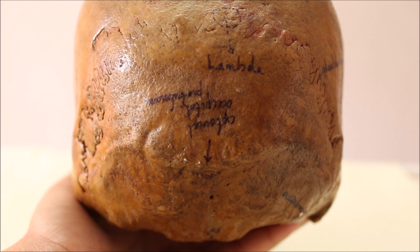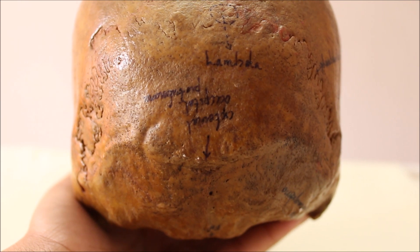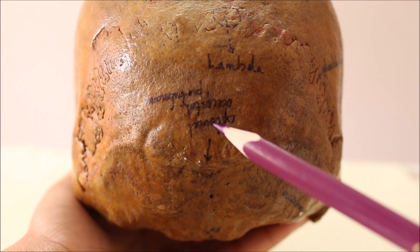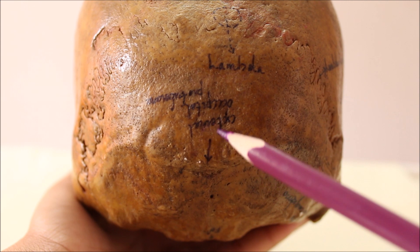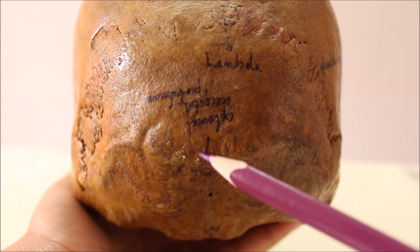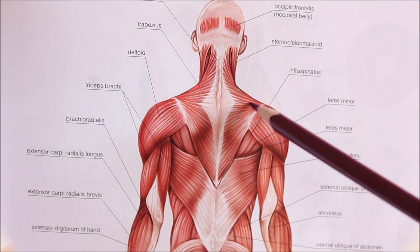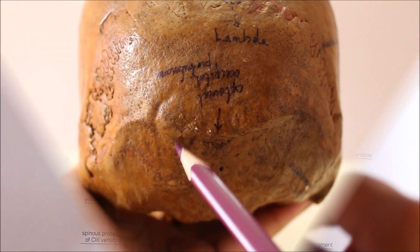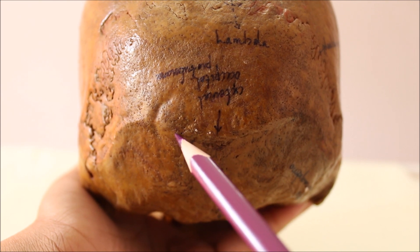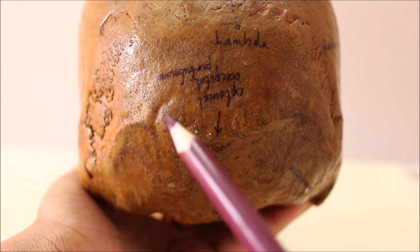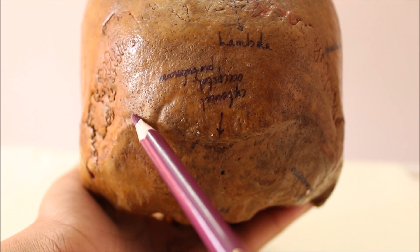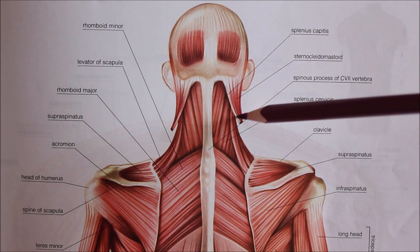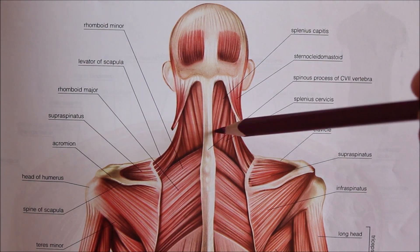Now let us learn about the attachments of muscles and ligaments on the norma occipitalis. The trapezius originates from the upper part of the external occipital protuberance, and the ligamentum nuchae is attached to the lower part of the external occipital protuberance. The medial one-third of the superior nuchal line gives origin to the trapezius, and the lateral part provides insertion to the sternocleidomastoid above and to the splenius capitis below.